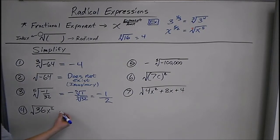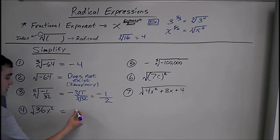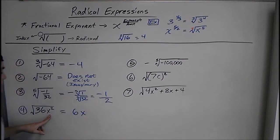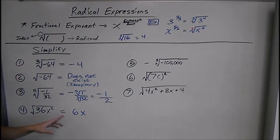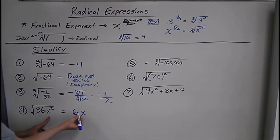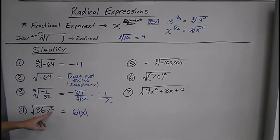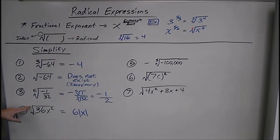Now we're going to throw some letters in there. We know the square root of 36 is just 6. But the square root of x squared — well, what times what equals x squared? We know that is x. But if x is a positive or negative number, this is not exactly true, because if you square it, it's always going to be positive. So what we write is absolute value symbols around the x — whenever we have any root of an even exponent.